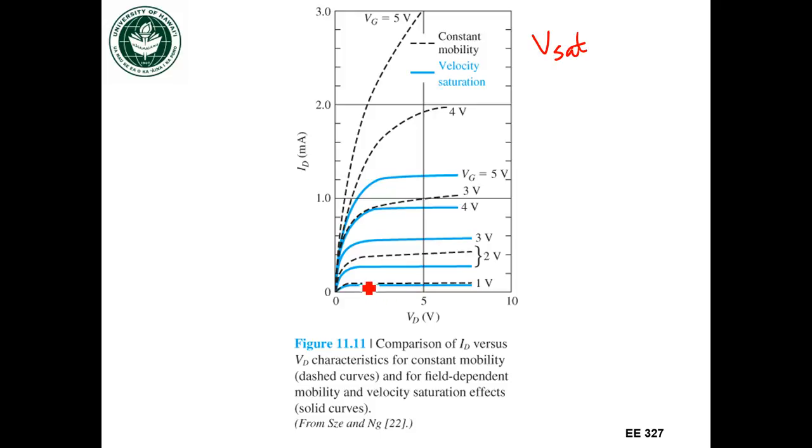You can see that at one volt it doesn't make much of a difference. At two volts you're already getting a lower current than you would if you didn't consider saturation velocity. At three volts, here's the one with velocity saturation.